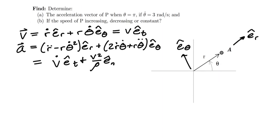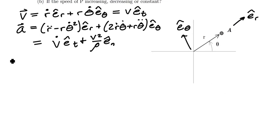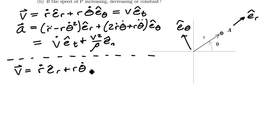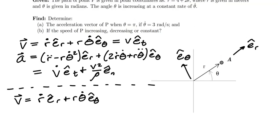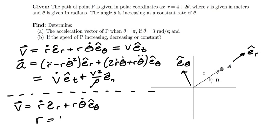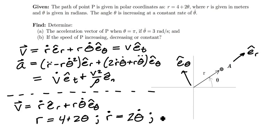Let's go ahead and solve this problem. Starting with velocity: r_dot in e_r plus r times theta_dot in e_theta. Given that r equals 4 plus 2 theta, taking the time derivative gives r_dot equals 2 theta_dot. Using a similar process, r_double_dot equals 2 times theta_double_dot.